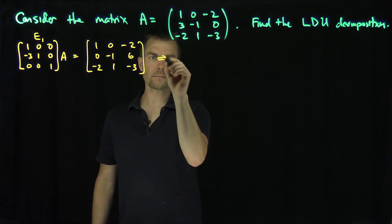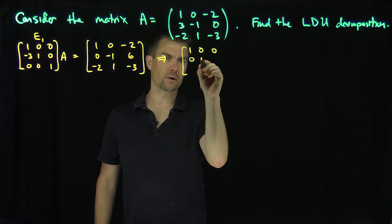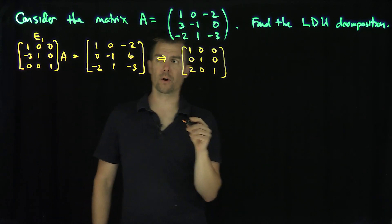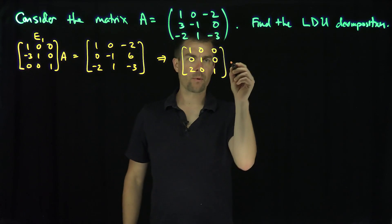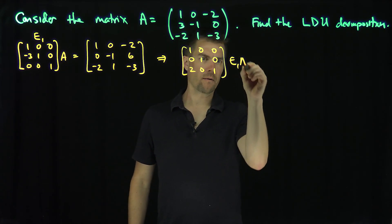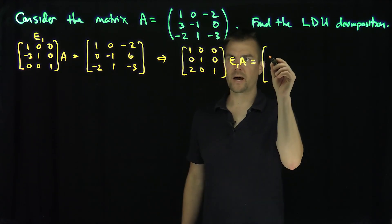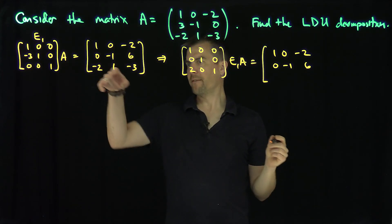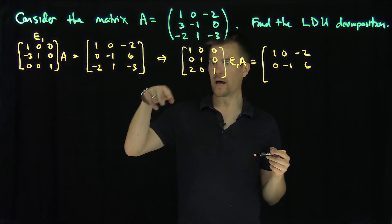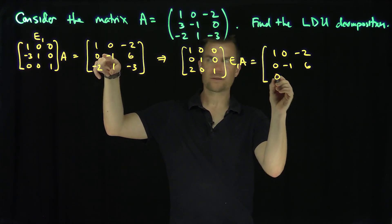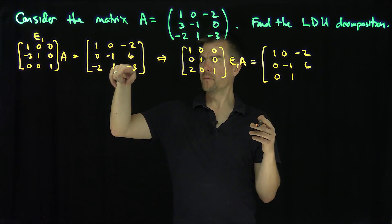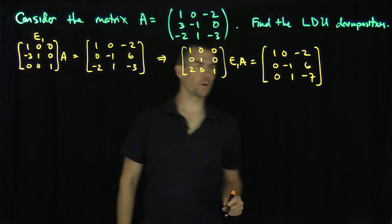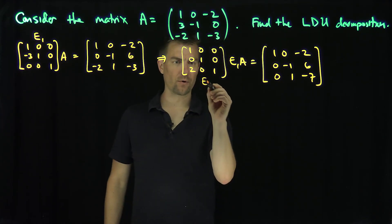Next I need to get rid of that 2, so I'll apply the elementary matrix: 1, 0, 0, 0, 1, 0, 2, 0, 1. That's the operation 2 times row 1 plus row 3. Applied to E1A this gives: 1, 0, negative 2, 0, negative 1, 6, and then 0, 1, negative 4, negative 7. I'll call this matrix E2.